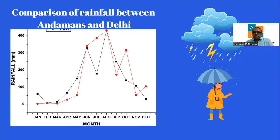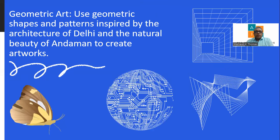Here is another graph I have drawn — a comparison of rainfall between Andamans and Delhi. If you see, the Andamans rainfall is much higher compared to Delhi. I have made a line graph for this. So you have to think of different ways to present data: the previous one was a comparison of temperature shown as a double bar graph, and this one is a line graph comparing rainfall in different months between Delhi and Andamans.